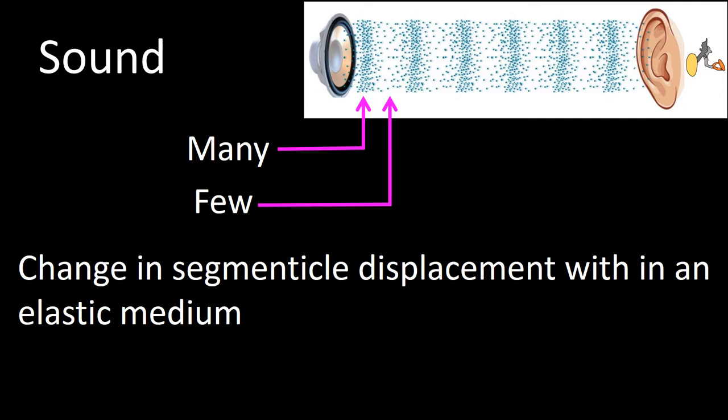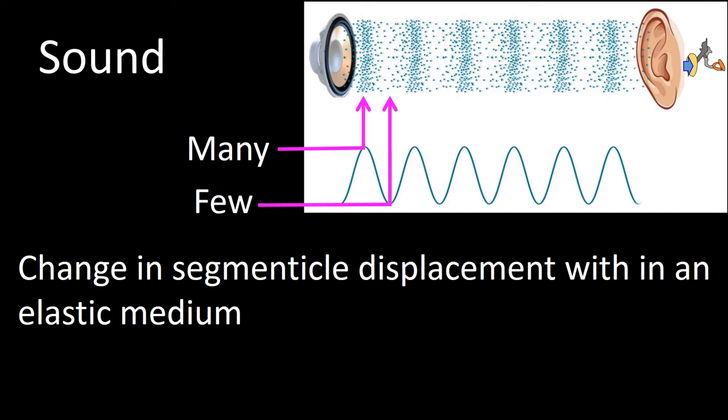Sound refers to the change in particle displacement within an elastic medium leading to stimulation of the hearing cells. Here we are representing the medium as air, and the blue dots represent particles going from many to few and from few to many. The displacement of the particles ultimately produces pressure fluctuations at the tympanic membrane. Those sounds can be represented as waves. The top of the wave indicates the many particles being displaced, and the bottom indicates the few particles being displaced.